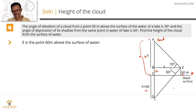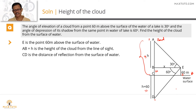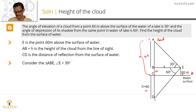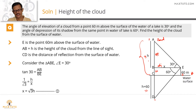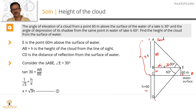AB is the height of the cloud from the line of sight, and CD is the reflection, equal to H plus 60 meters. In right triangle ABE, angle AEB equals 30 degrees. AB is the opposite side and BE is the adjacent side, so tan 30 equals AB divided by BE. With AB equal to H and BE equal to X, tan 30 gives 1 by root 3 equals H by X, so cross multiplying, X equals root 3H.